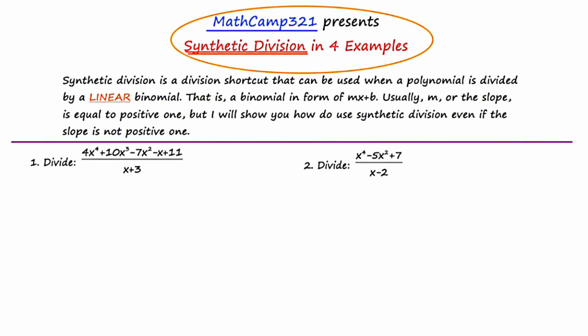So to start, let's take a look at number 1: divide the polynomial 4x to the 4th plus 10x cubed minus 7x squared minus x plus 11 by the divisor x plus 3. Let's first take note of the divisor and that the divisor is linear. If I were to graph y equals x plus 3, it would look like a line. And that condition has to be met before I can even use this shortcut called synthetic division. But since it is, we know it's a candidate and I can go forward.